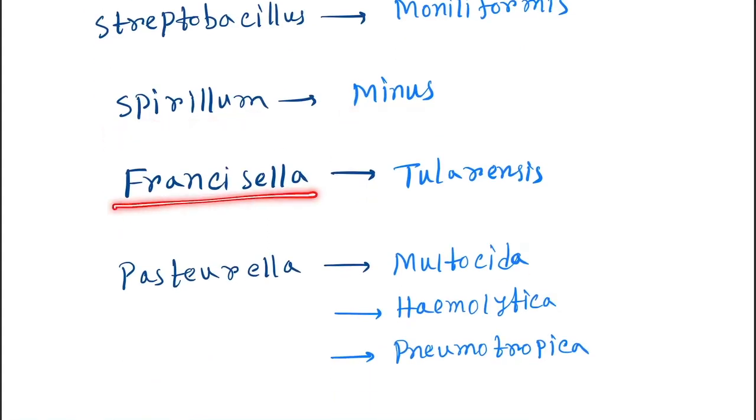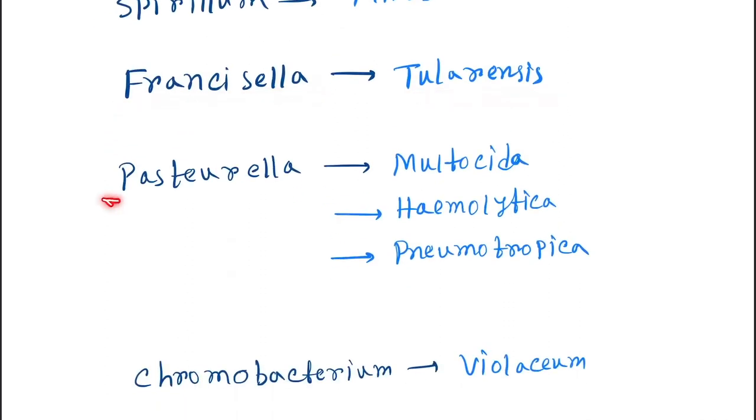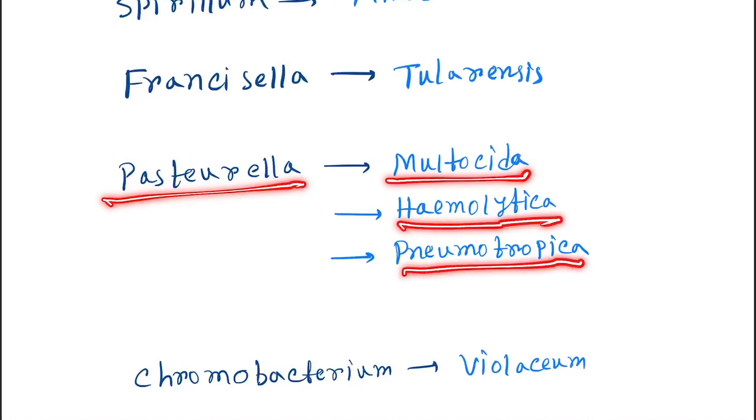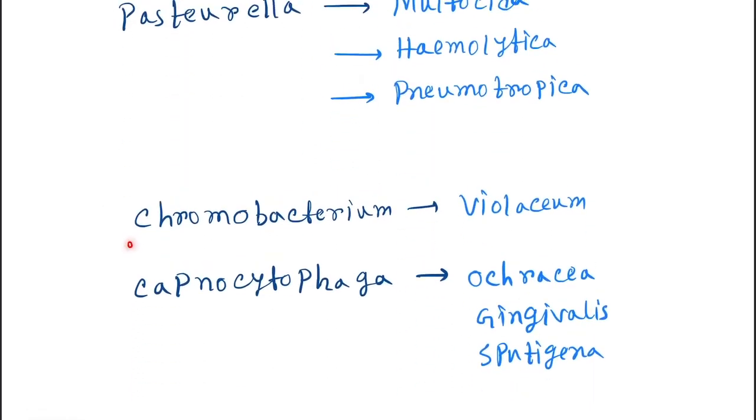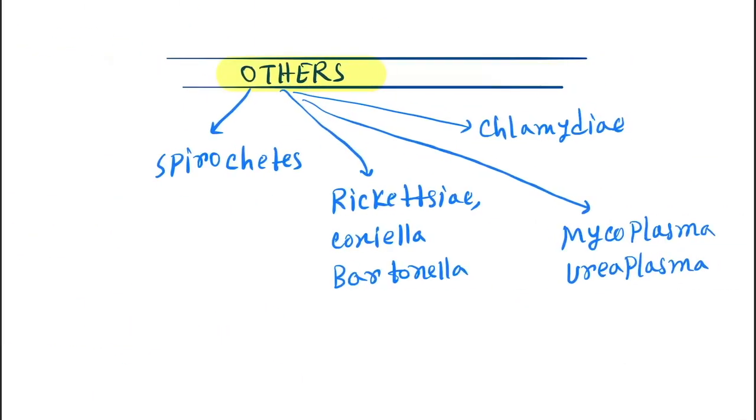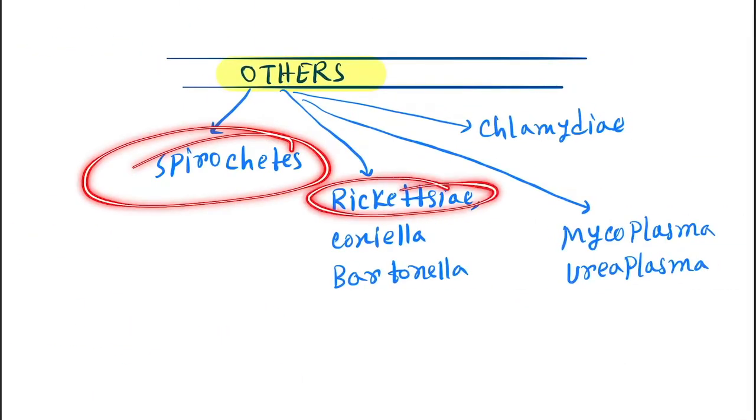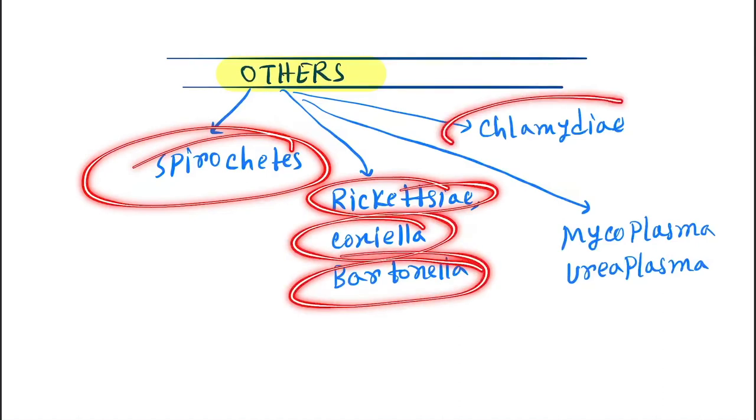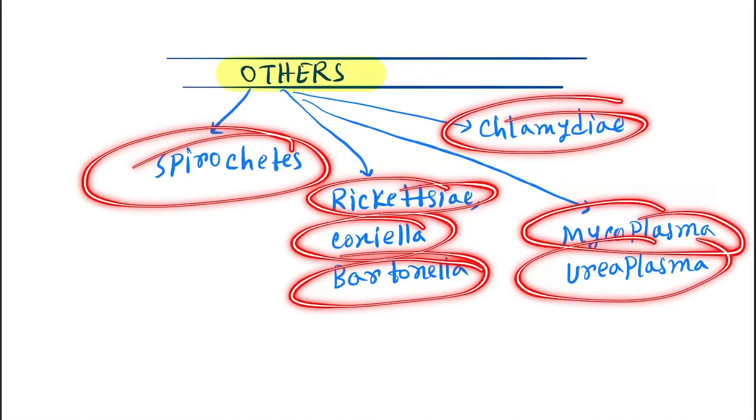Next is donovanosis inguinale, Gardnerella vaginalis. Next is Streptobacillus moniliformis, Spirillum minus, Francisella tularensis, Pasteurella multocida, haemolytica, and pneumotropica, Chromobacterium violaceum, Capnocytophaga ochracea, gingivalis, and sputigena. Next, others: Spirochetes, Rickettsia, Coxiella, Bartonella, Chlamydia, Mycoplasma.